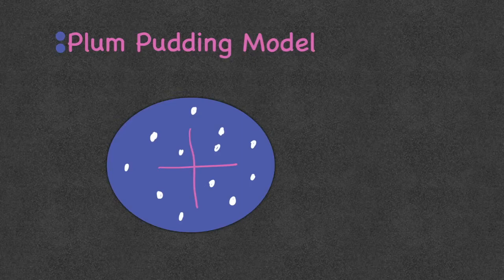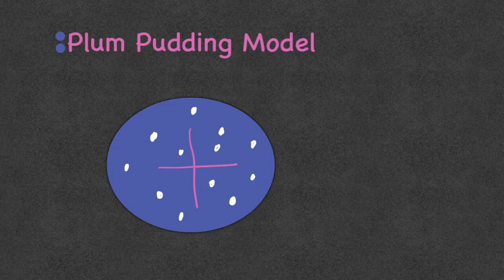Plum pudding is like a bready pudding with bits of raisins throughout. He said the bready pudding part was like the positive solid mass of the atom, and the raisins scattered throughout were like the electrons. So J.J. Thompson's model is called the plum pudding model.